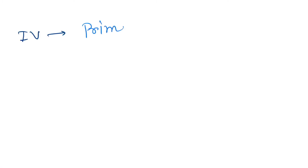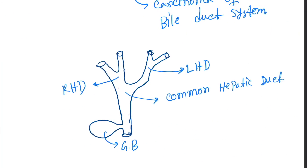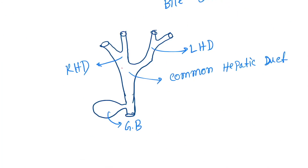Category 4: the stricture involves the primary confluence plus both right and left secondary confluences — so all three confluences are involved: primary, left secondary, and right secondary.